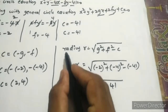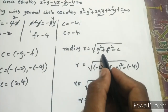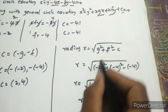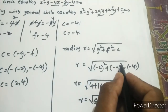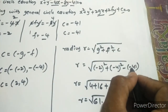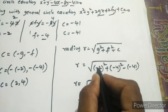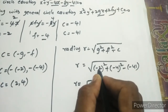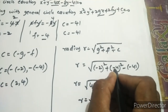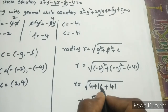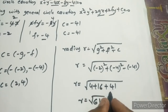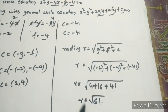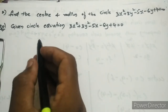The radius r = √(g² + f² - c). Substituting g = -2, f = -4, c = -41: r = √((-2)² + (-4)² - (-41)) = √(4 + 16 + 41) = √61. So the radius r = √61.